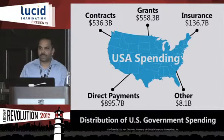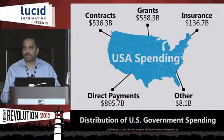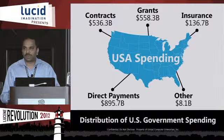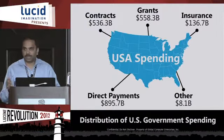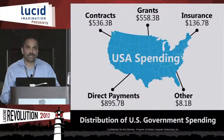To give you an overview of how the money is spent: there are contracts given to commercial organizations doing business for the federal government; grants for academic or commercial institutions doing research or new work; direct payments such as social security payments; and loans and insurance payments paid by the federal government.